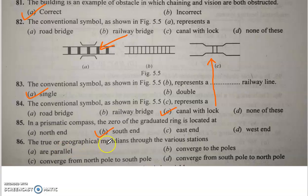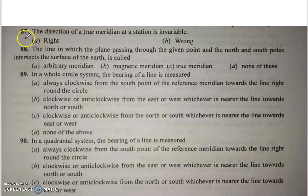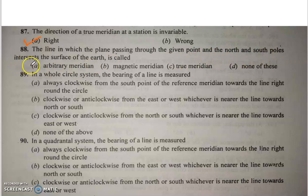Q86/87/88: The true or geographical meridian indicates the line in which the plane passing through the given point and the north and south poles intersects the surface of the earth — it is called the true meridian. Q89: In the whole circle bearing system, the bearing of a line is measured clockwise from north.